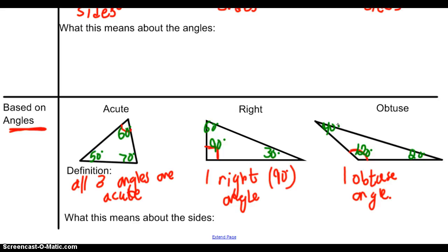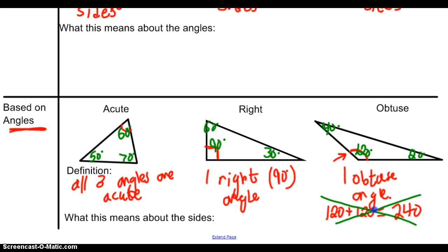An obtuse triangle can't have more than one obtuse angle because think about it — if I had more than one obtuse angle, like 120 and another 120, I'm already over 180 degrees. 120 and 120 is 240, and I can't have a triangle with more than 180 degrees, so I definitely can't have more than one obtuse angle.